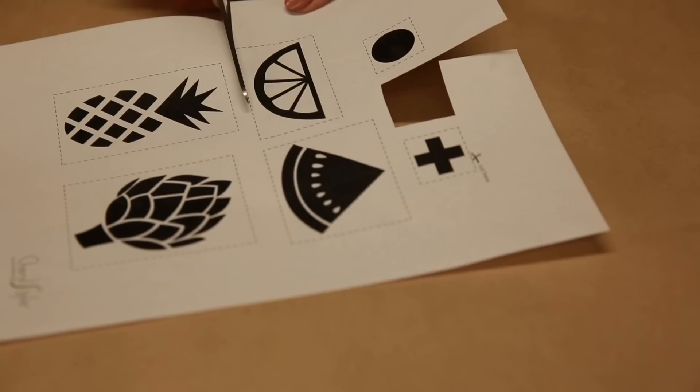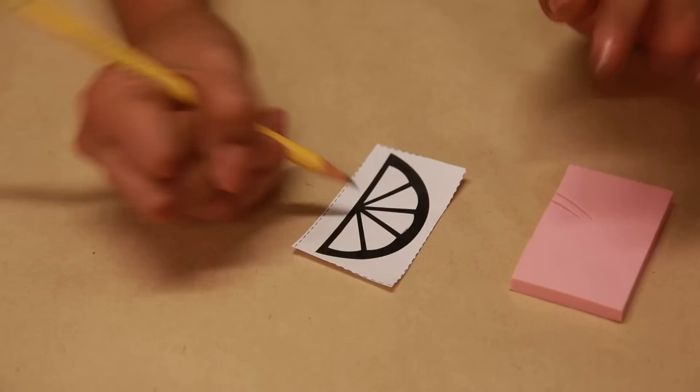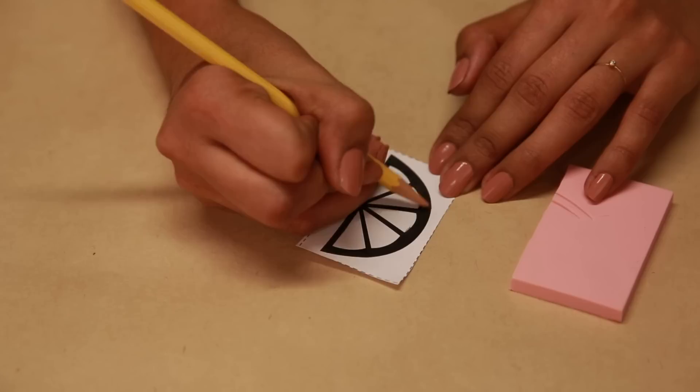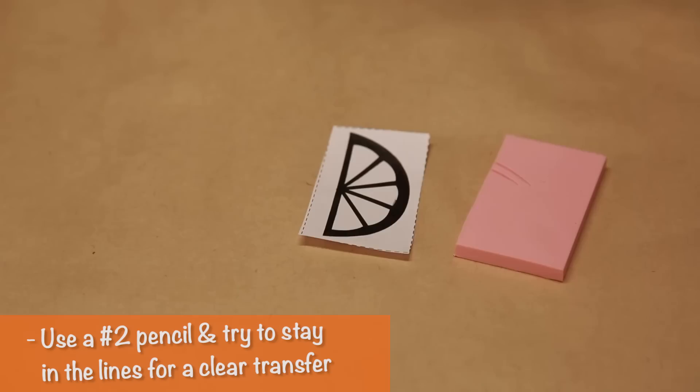First thing you're going to do is just cut out whichever design that you want to use as a stamp. You're going to transfer your design to the block, and how you do that is just color over the template.